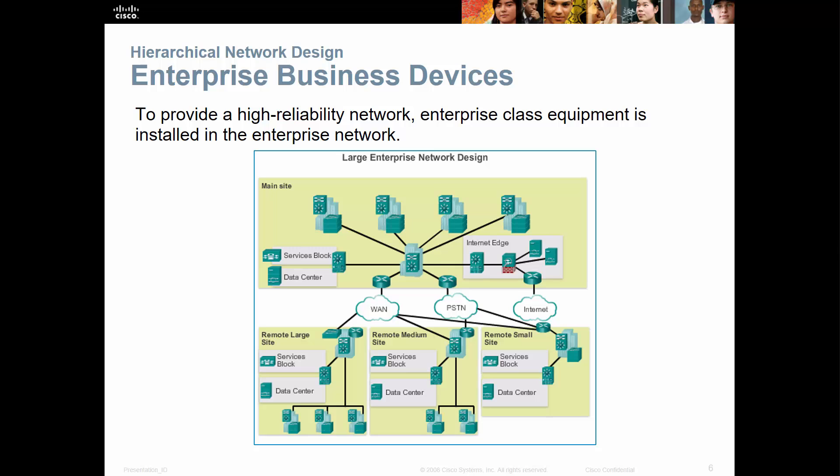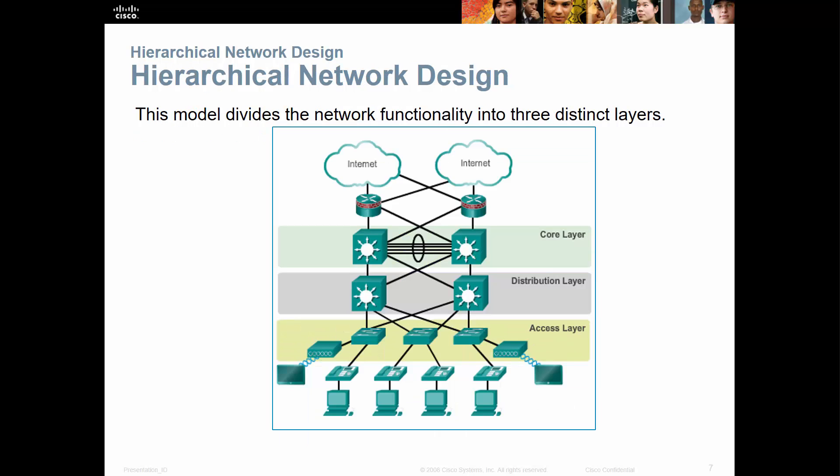Enterprise business devices include things like data centers, service blocks, customer edges, and provider edges. The hierarchy design, which we've discussed in other courses, is the three-switch tiered model: a core layer, a distribution layer, and an access layer.